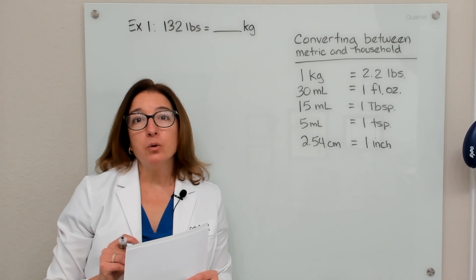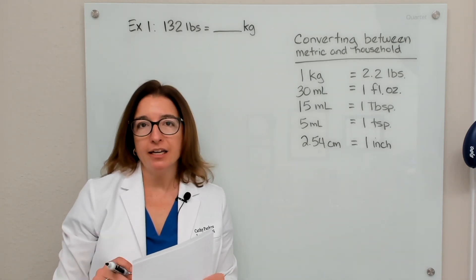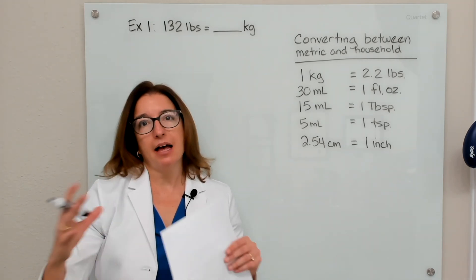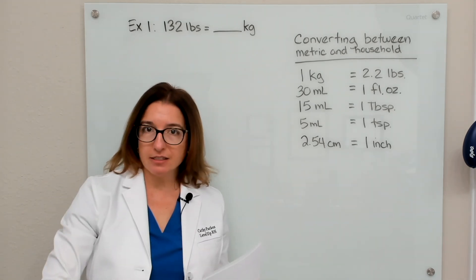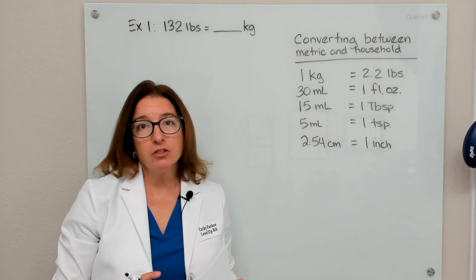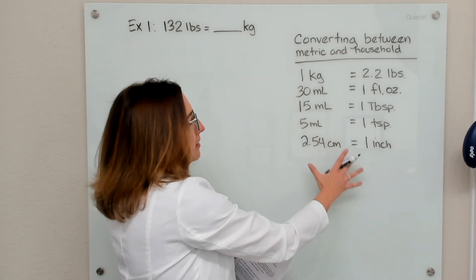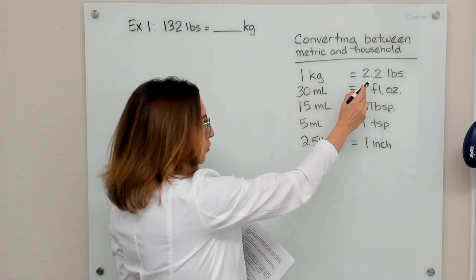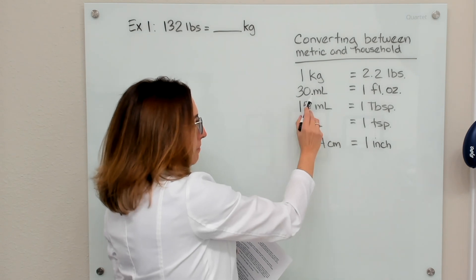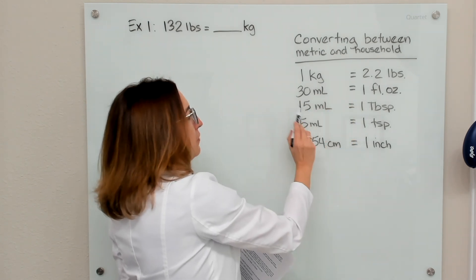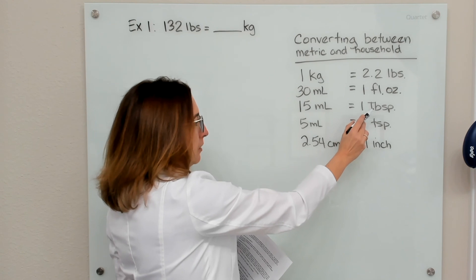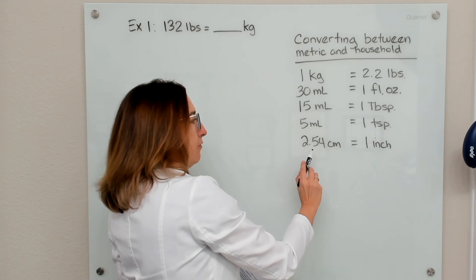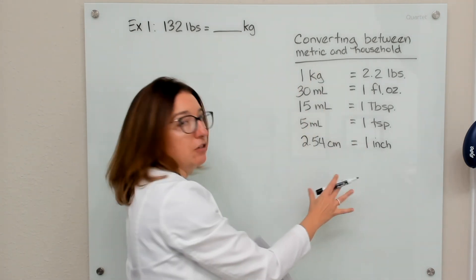In this video, I'm going to work through example problems of converting from the metric system to the household system, or vice versa, from the household system to the metric system. In order to do this, you have to memorize these conversion factors: one kilogram equals 2.2 pounds, 30 milliliters equals one fluid ounce, 15 milliliters equals one tablespoon, five milliliters equals one teaspoon, and 2.54 centimeters equals one inch. You have to know these.